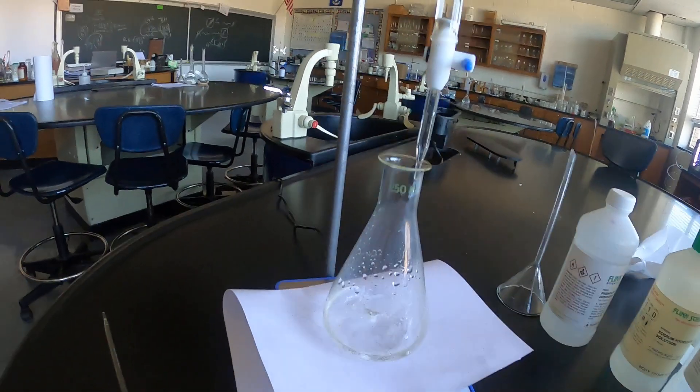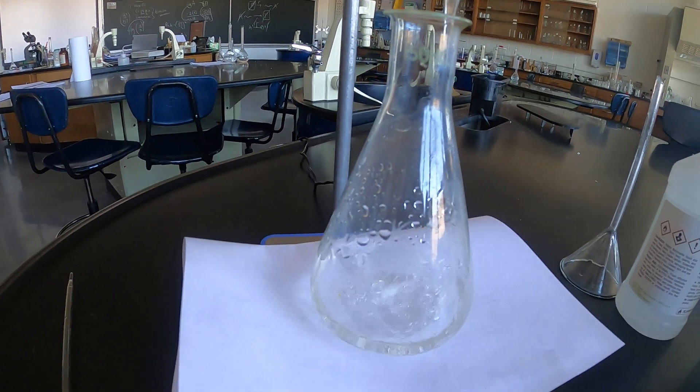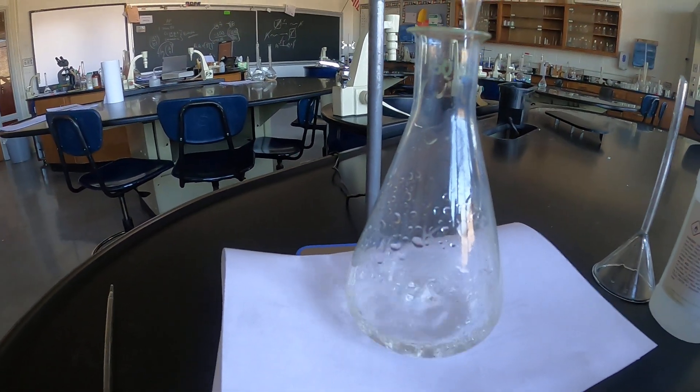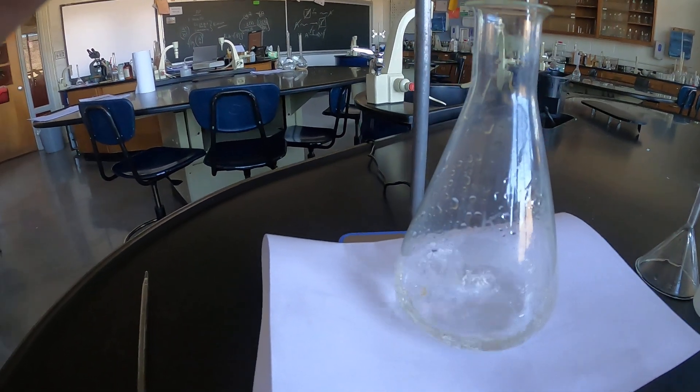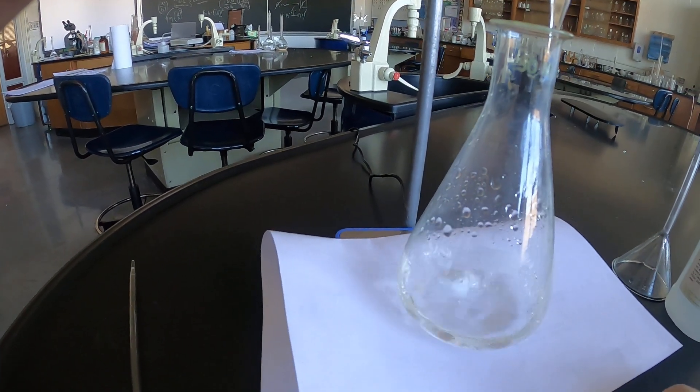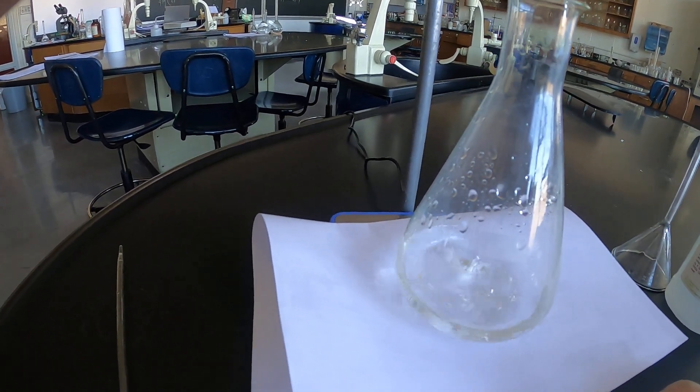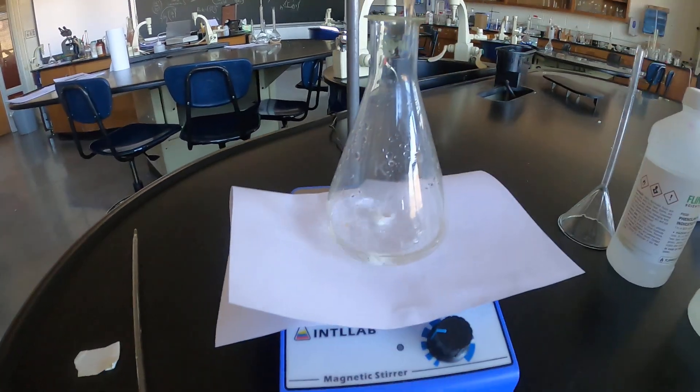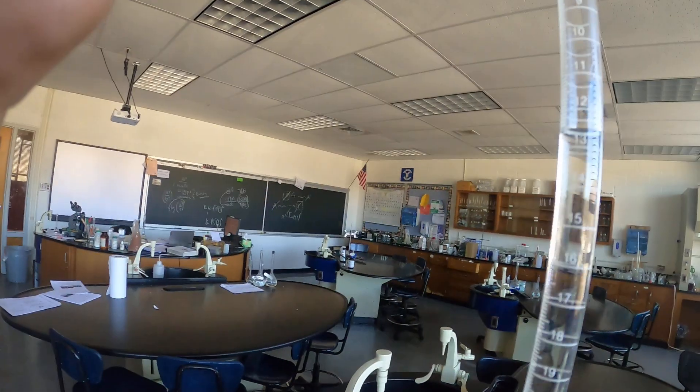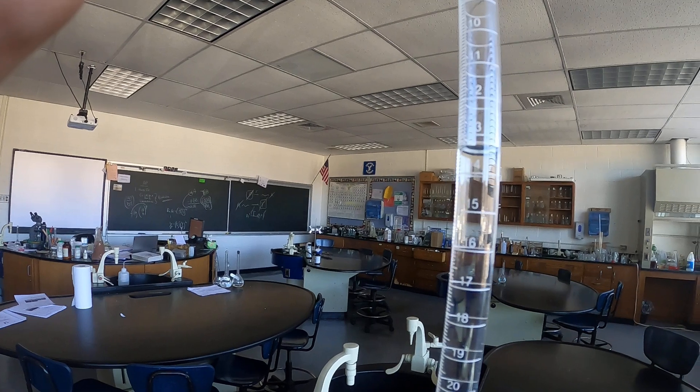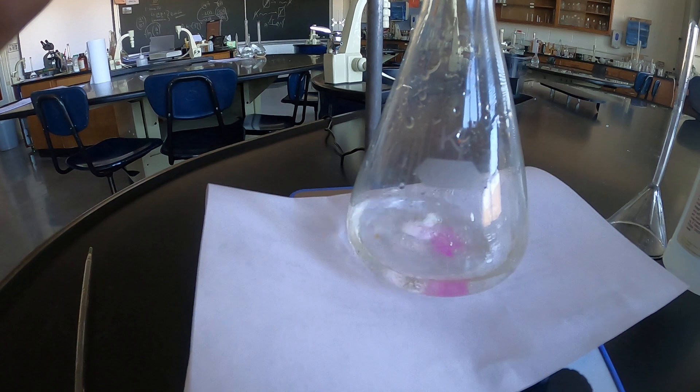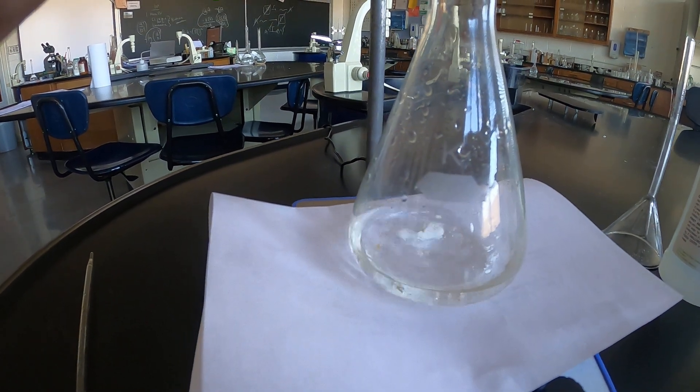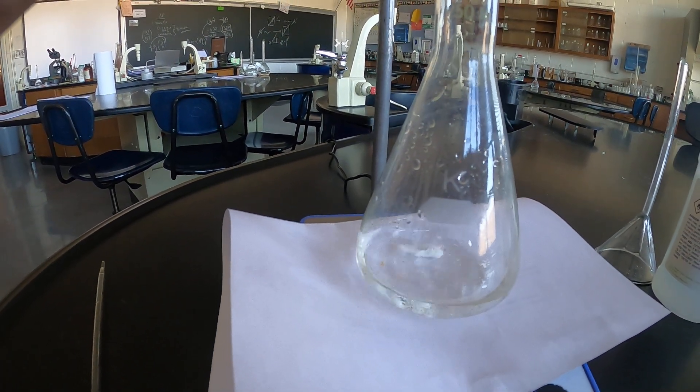I'm trying to titrate to again the endpoint or the equivalence point in this titration which is getting the solution to a pH of seven. And again that is indicated by a pink color in your analyte withstanding for more than 30 seconds. So let's turn my stir plate back on, let some more titrant out. I'm at 13, 14, 15. Notice the color, so it's standing longer. Good habit to turn it off, check for your color.